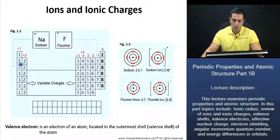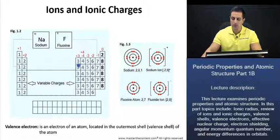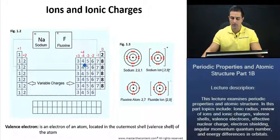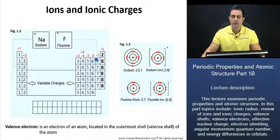Group 1 is going to lose one electron — that one valence electron it has. Group 2 is going to lose two valence electrons. Group 3 is going to lose three valence electrons. Group 4 can either gain or lose four valence electrons. Group 5 is going to gain three electrons. Group 6 would rather gain two electrons. And group 7 is going to gain one electron.